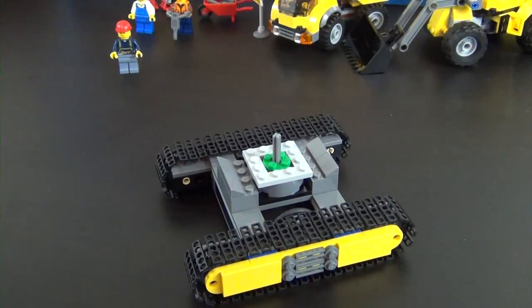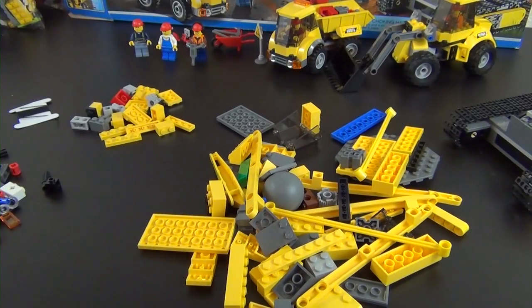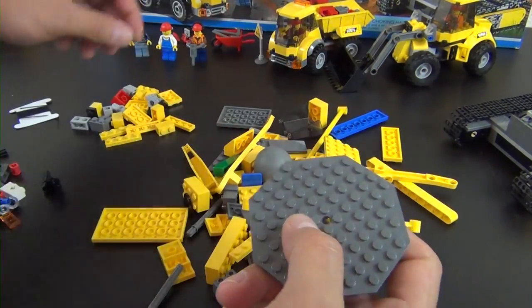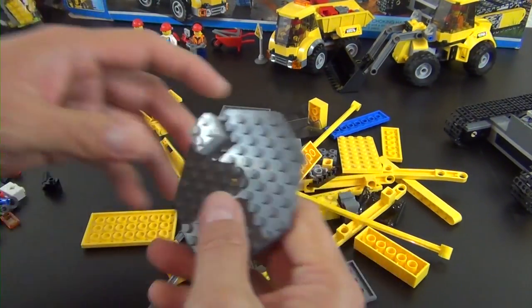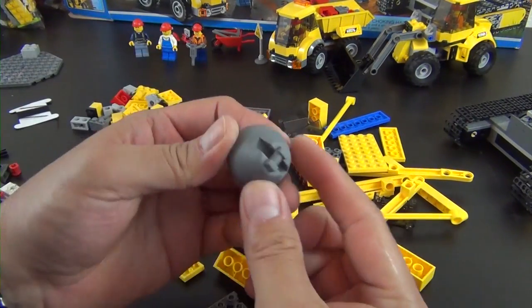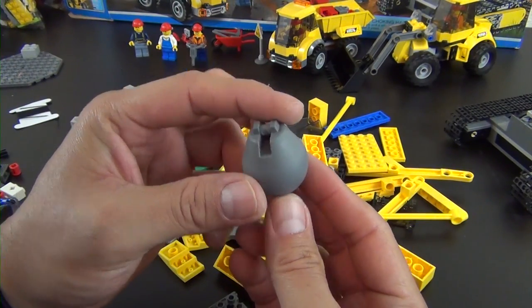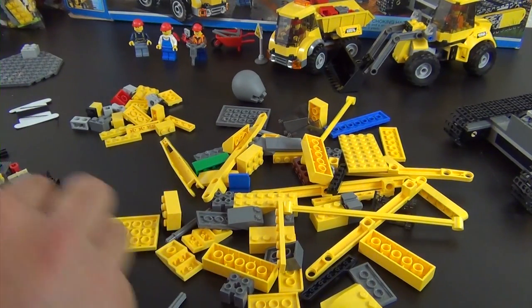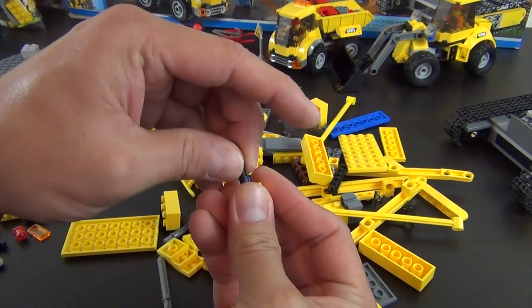We have all of our bag four parts dumped out and definitely feels like bag four has the most amount of parts in it. So we're going to try to blow through this. And this is pretty cool - it's actually a hard rubbery demolition ball piece.